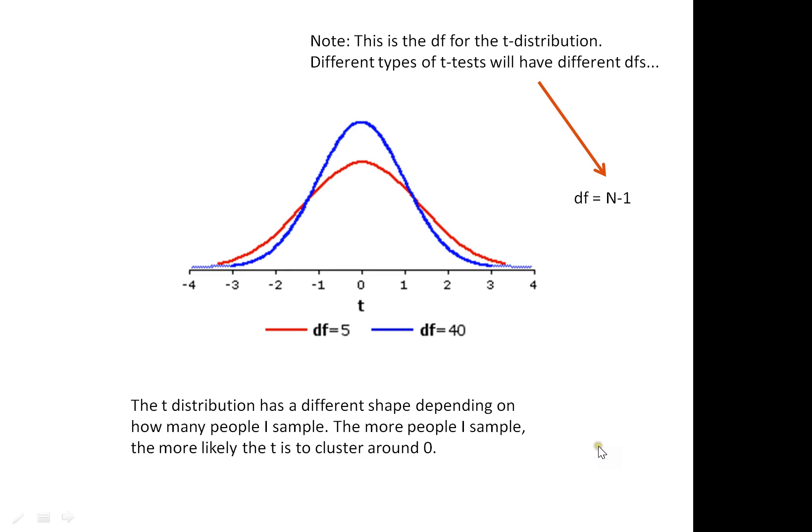The t-distribution has different shapes depending on the number of degrees of freedom. If we have very few, then it's a bit flatter and there's a little bit more space down. It takes us a little bit further into the extreme values to get to our 5%. If we have more degrees of freedom, in fact, it starts to look more normal, and therefore we can have a lower critical t-value in order to decide that something is meaningful.